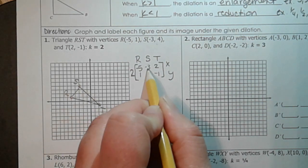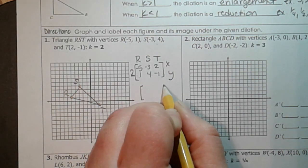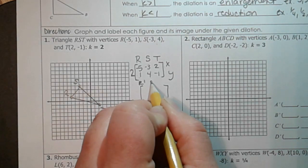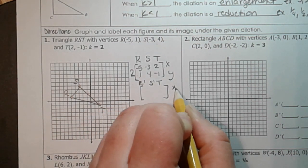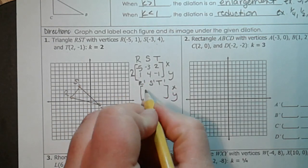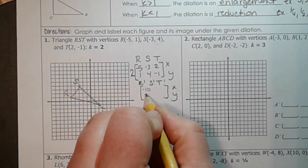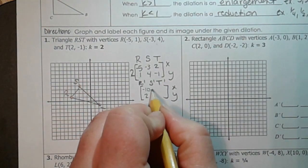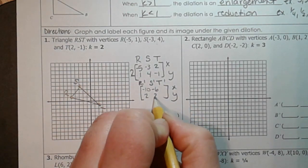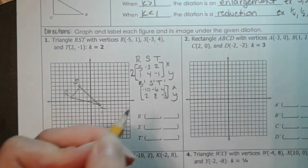So this 2 gets multiplied by every single number, and we're going to spit out a matrix that's got r prime, s prime, and t prime. The x values are going to be on top, the y values are going to be on bottom. 2 times negative 5 gives us negative 10. 2 times 1 gives us 2. 2 times negative 3 gives us negative 6. And we get 8 down there, we get 4 there, and we get negative 2 there.